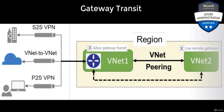The same thing can happen from vNet1 to other vNets, or a point-to-site connection which vNet1 may have. In this case, vNet2 can talk to all those networks because vNet1 has allow gateway transit enabled.